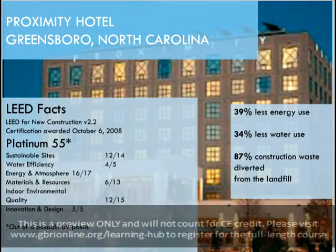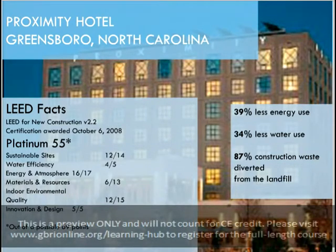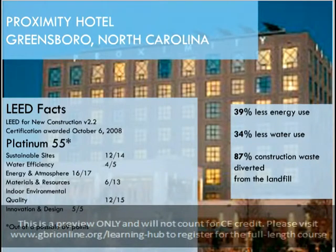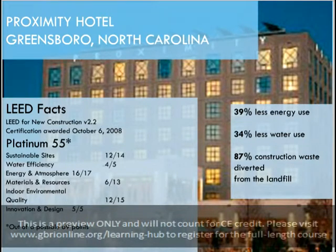The Proximity Hotel in Greensboro, North Carolina — this four-diamond rated hotel is the first hotel in the nation to achieve LEED Platinum under NC version 2.2. They managed to achieve 55 out of a possible 69 points. The hotel has 5,000 square feet of conference and event space and a full service restaurant. The highlights of their scoreboard are 39% less energy use, 34% less water use, and 87% construction waste diversion when compared with a similar building. The project achieved four out of five points available under water efficiency.